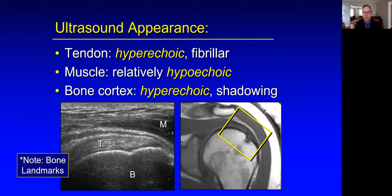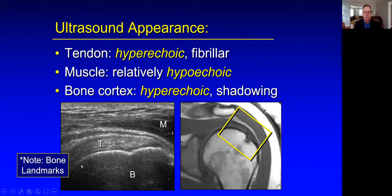The muscle is relatively hypoechoic, indicated here as the deltoid muscle in M. The bone cortex is bright, as shown on the ultrasound. Recognition of the bone landmarks is very important and helps with orientation. Noting the curved surface of the humeral head tells us where we are in space, and this looks fairly similar to a coronal oblique MRI.